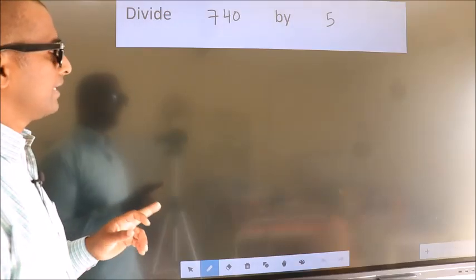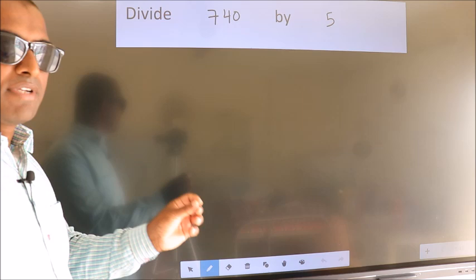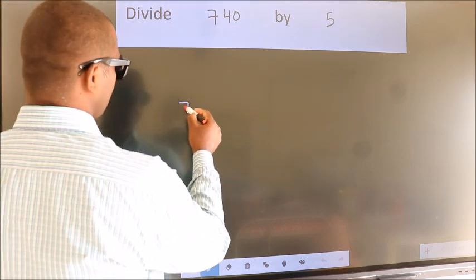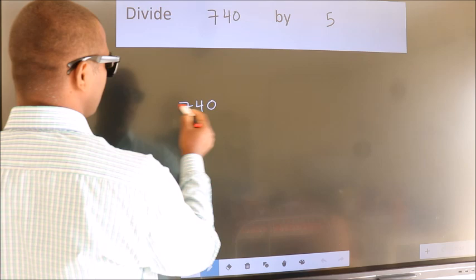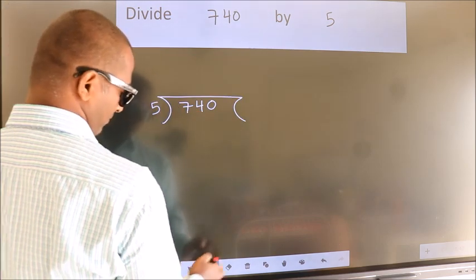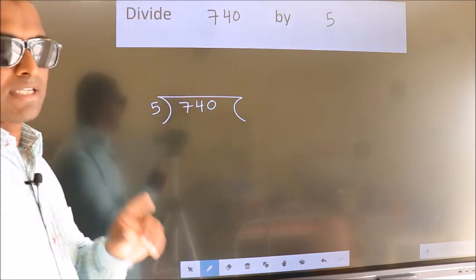Divide 740 by 5. To do this division, we should frame it in this way. 740 here, 5 here.